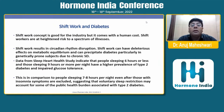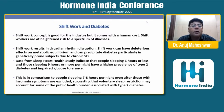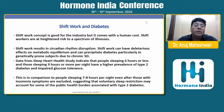Shift work results in circadian rhythm disruption and can have deleterious effects on metabolic equilibrium, precipitating diabetes — particularly in genetically susceptible subjects — due to chronic sleep deprivation. Data from the Sleep Heart Health Study indicates that people sleeping 6 hours or less, and those sleeping 9 hours or more per night, have a higher prevalence of type 2 diabetes compared to people sleeping 7 to 8 hours per night, suggesting that voluntary sleep restriction may account for some of the public health burden of type 2 diabetes.